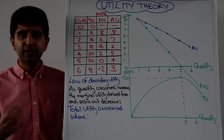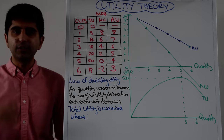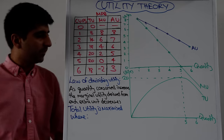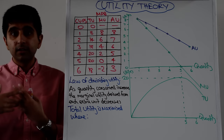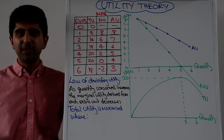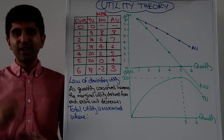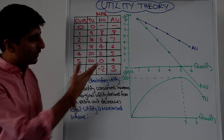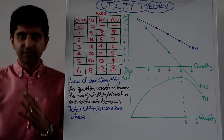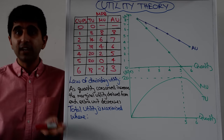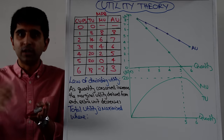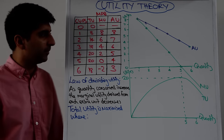This continues until we get to the fifth unit. When the fifth unit is drunk, there is no more utility to be gained compared to the fourth. And if that consumer drinks the sixth unit, it starts to feel worse — maybe a bit bloated, a bit gassy, a little bit sickly. That's what we mean when we have a negative marginal utility. The more that is consumed, the less benefit we derive from each unit we are consuming.